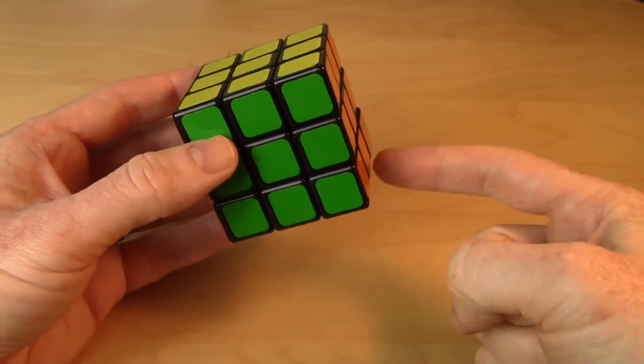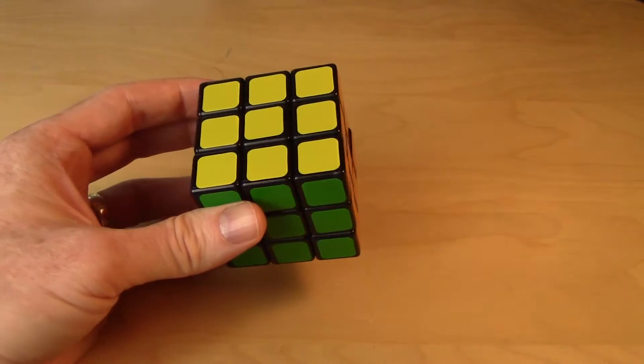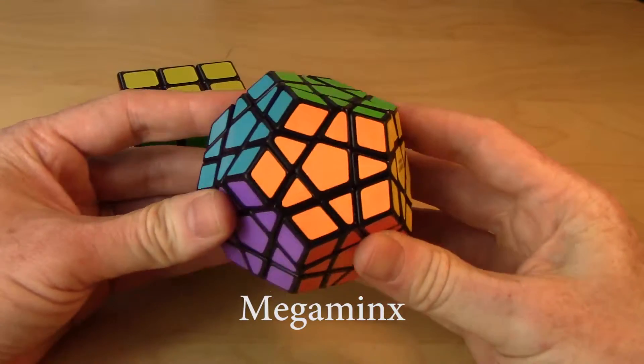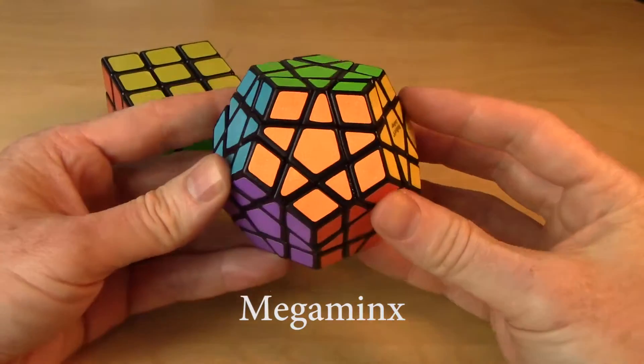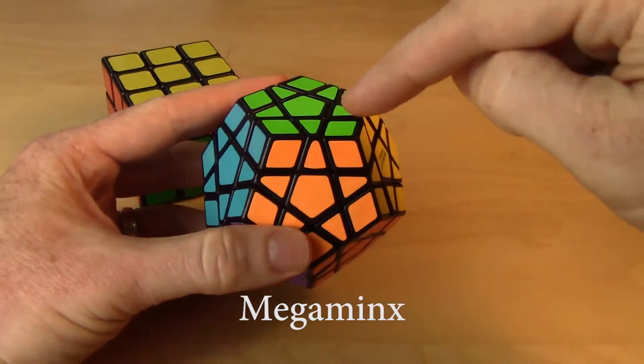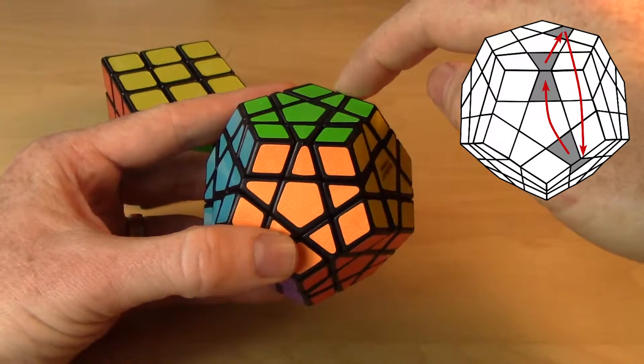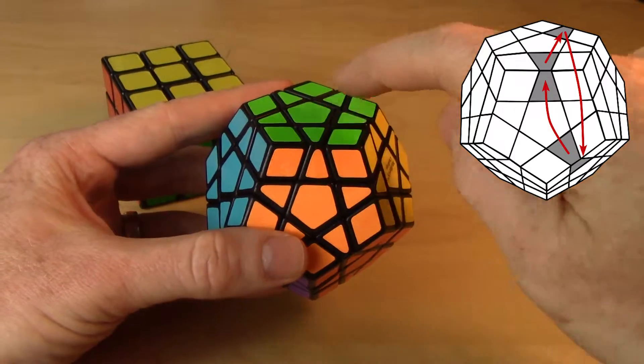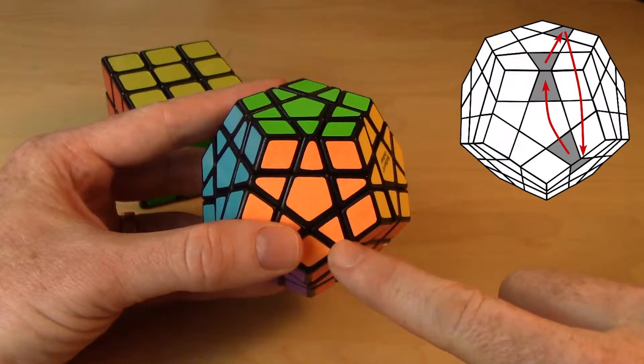The nice thing about that one that I just did is that that becomes a very natural one to use on this puzzle, Megaminx. Now, maybe I demonstrate this one. This might be a good thing to do here. So what we're going to do is we're going to cycle, let's say that edge, that edge, and let's say this edge here. So that one, that one, and that one. So again, two in the upper layer and one in a lower layer.